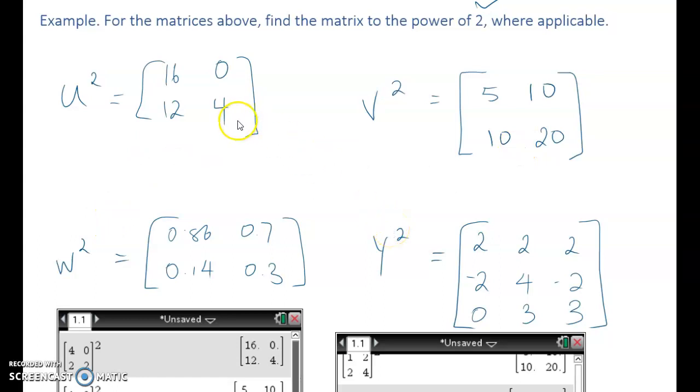Also note that the product matrices have the same order as the square matrix that you used to generate it. So all these had the order 2 by 2, and they all gave matrices of 2 by 2. And Y had an order of 3 by 3, and when you squared it, it was still 3 by 3. Okay, all done. Good luck.